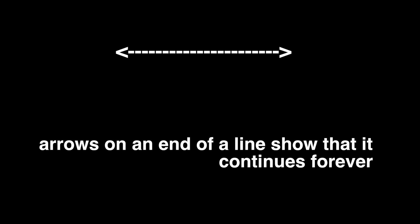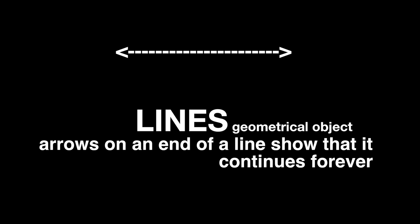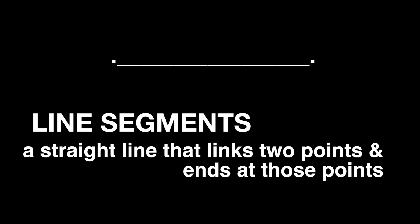In third grade you'll learn about lines and angles. Let's get a jump start on these math concepts to prepare for the upcoming school year. Lines are geometrical objects — arrows on the end of a line show that it continues on forever in those directions. In this lesson we will mostly refer to another type of line called a line segment.